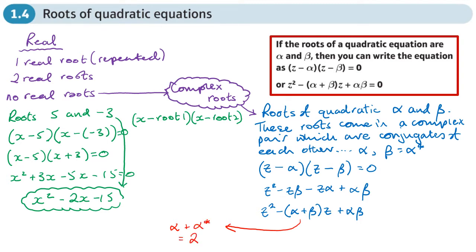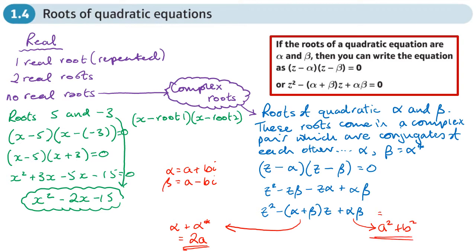Since beta is the conjugate of alpha — say alpha = a + bi and beta = a - bi — we know that alpha + beta = 2a, and when we multiply a number by its conjugate we get a² + b². So those give us quick ways to work out the coefficient of z and the constant term to build our quadratic in z.